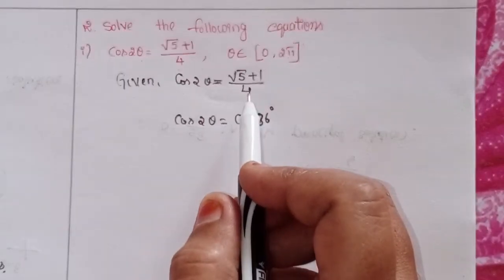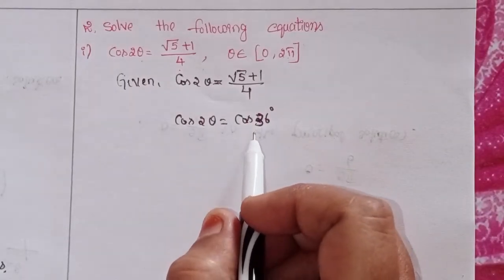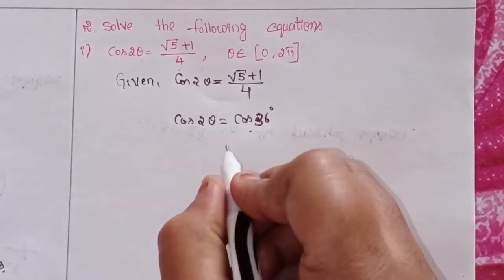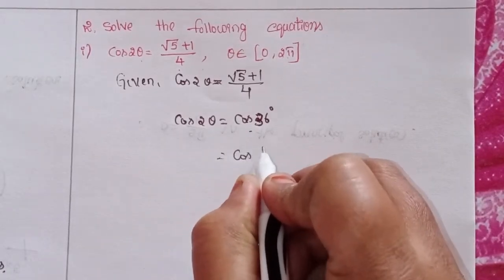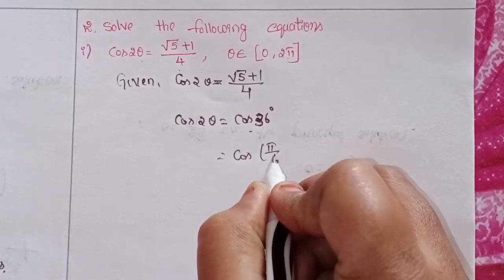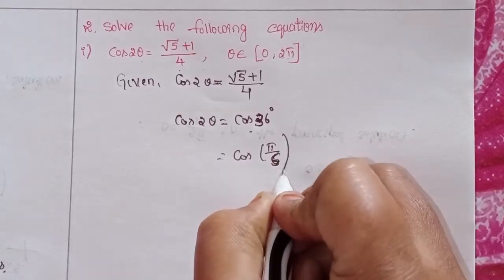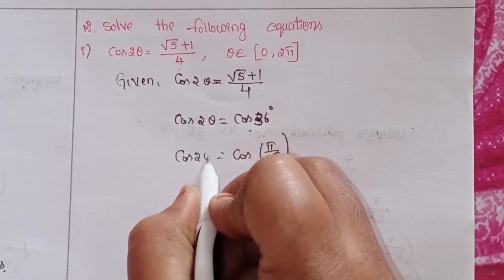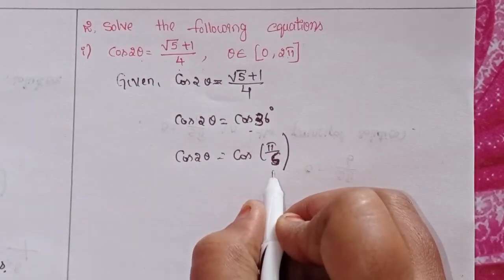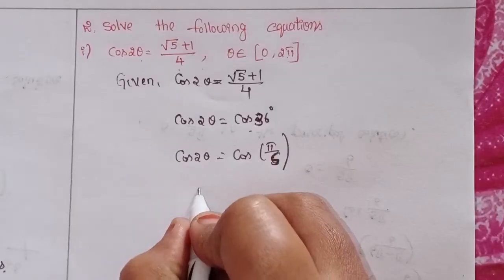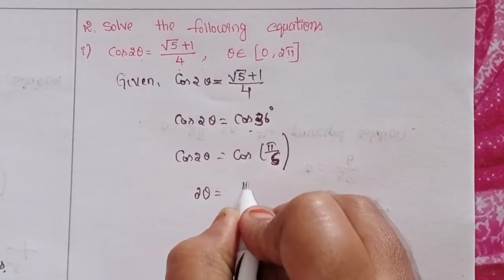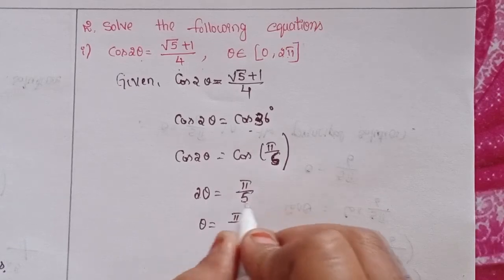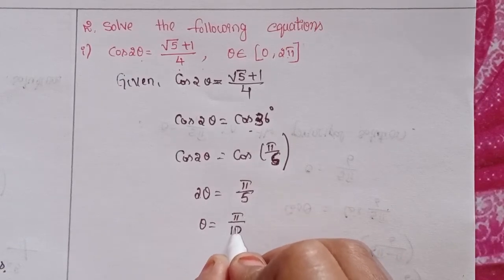cos 2θ equals this value in terms of cosine, which means cos 36 degrees. You can write this as cos(π/5). So cos 2θ = cos(π/5), which gives 2θ = π/5, therefore θ = π/10.